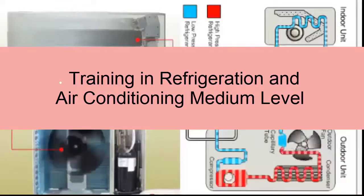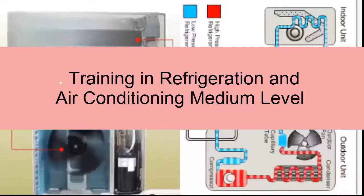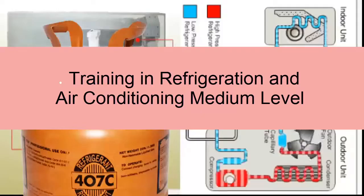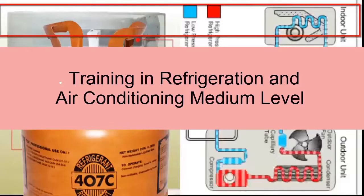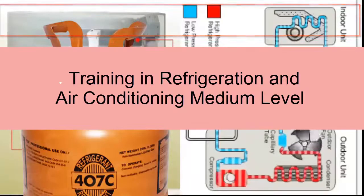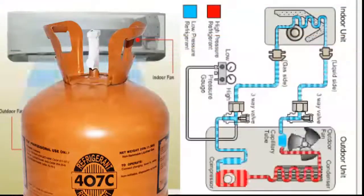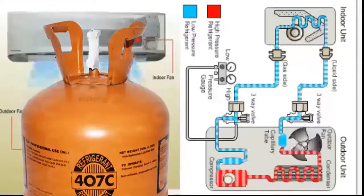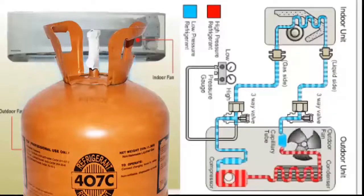In this class 47 of our Intermediate Level Refrigeration and Air Conditioning course, we are going to study air conditioning that works with the R407C refrigerant gas and its working pressures. R407C is a refrigerant gas used mainly in air conditioning and refrigeration applications at medium and high temperatures. We are going to focus on the gauge pressures of R407C in an air conditioner.